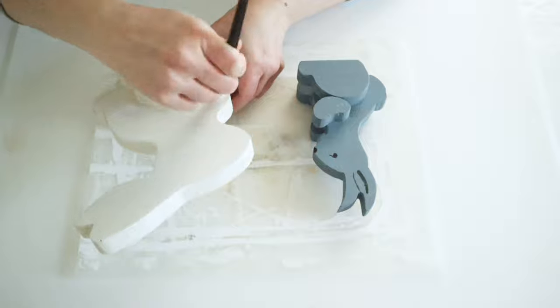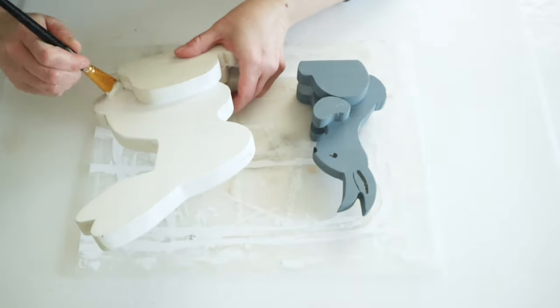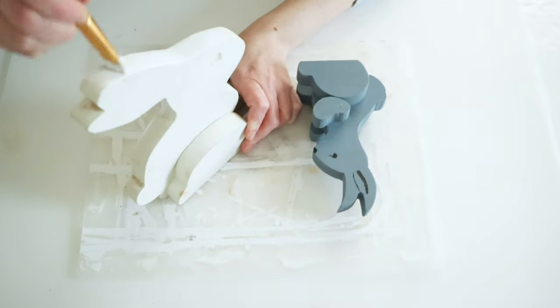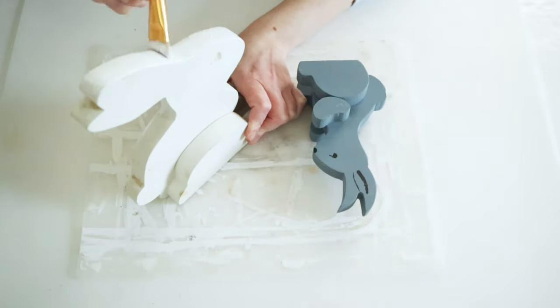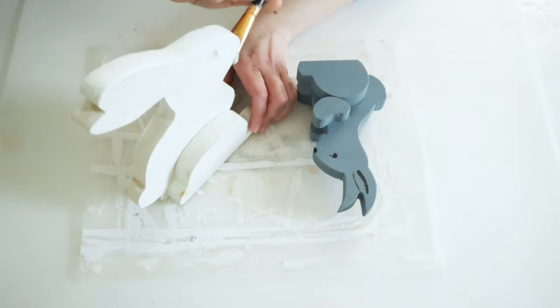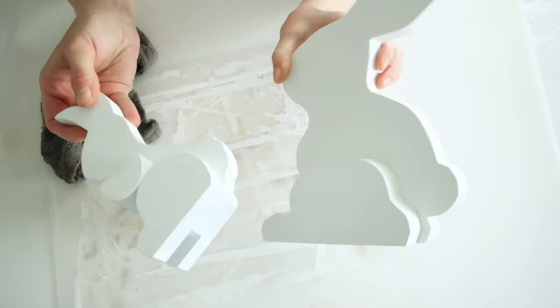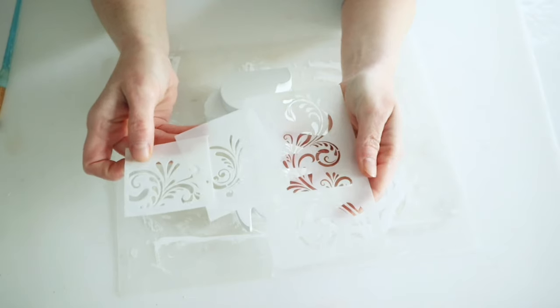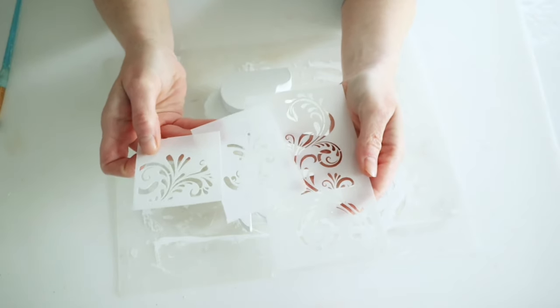For both of these I'm using some of my Waverly white chalk paint. The white one I did two coats, and for the blue one I ended up doing about three to four coats. Once I painted them they were already looking so much better, but I definitely wanted to do a really simple design on these.